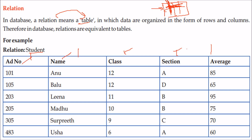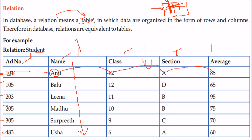The student table has 6 tuples — 6 records. For example, Anu is studying in class 12, is in section A, has an average of 85, and has admission number 101. This is one tuple, which is a set of related data. One column specifies a property — for instance, the name column will contain only names, and the class column will contain only class values.